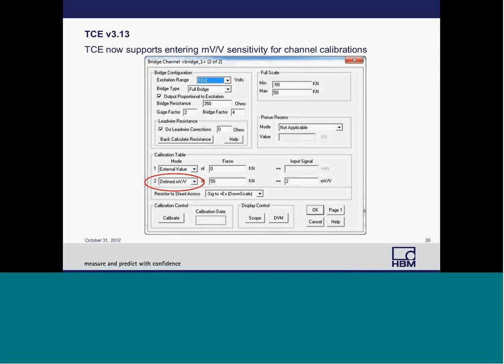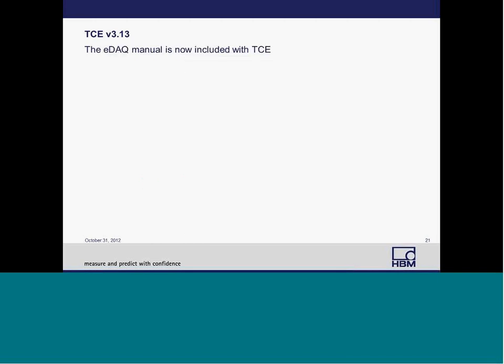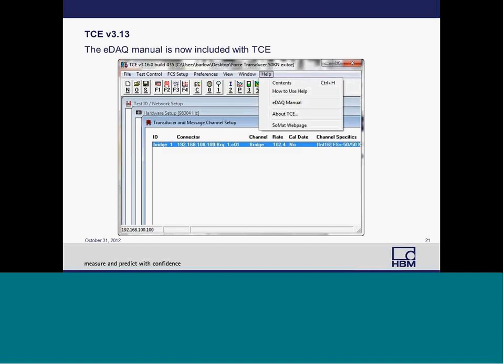Also in TCE version 3.13, TCE now supports entering a millivolt-per-volt sensitivity for channel calibrations. Prior to this being added, if you had a transducer with a millivolt-per-volt sensitivity, you would have to calculate a sensitivity based on its excitation. Now you can define it in the pull-down menu on the calibration table. Another update for 3.13 was that the EDAC manual is now included in TCE. If you go to the toolbar and select Help, then select the EDAC manual.